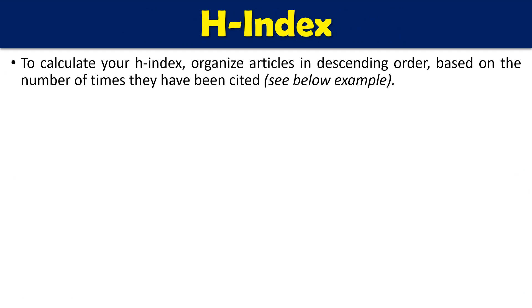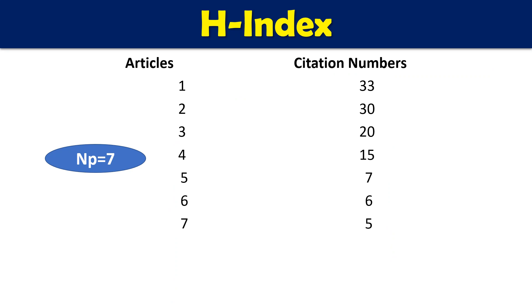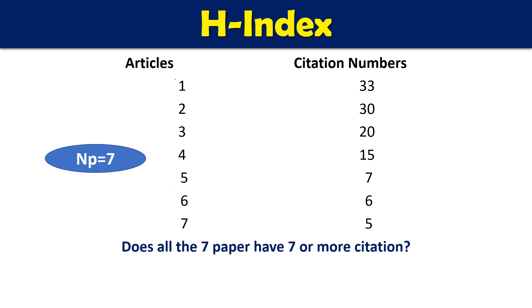To calculate H index, we arrange all publications in descending order based on the number of citations. In this example, there is an author who has seven publications — papers one through seven — and each paper has a different number of citations. The first paper has 33 citations, the second paper has 30 citations, and so on. This author has a total of seven papers, so the maximum H index this author can have is not more than seven.